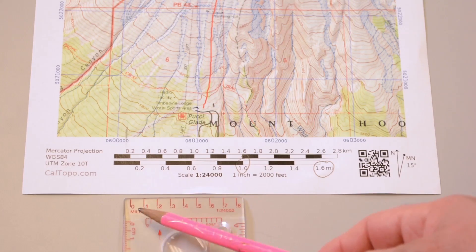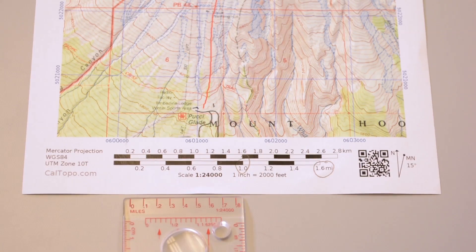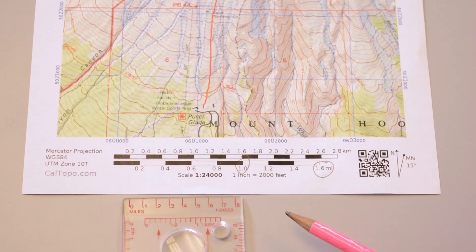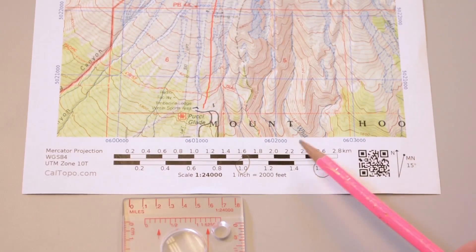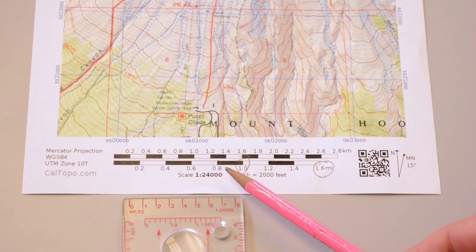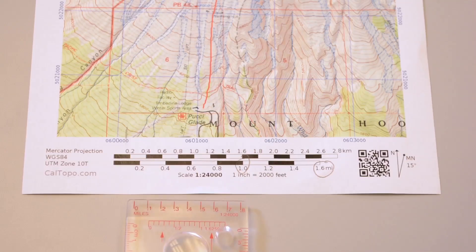On the end of the base plate, a handy feature not found on many compasses is a 1 to 24,000 scale map ruler. If your map is printed at 1 to 24,000, as this one is, the standard scale for topographic maps in the United States, you can measure distance in tenths of a mile just by putting this end of your compass directly on your map.